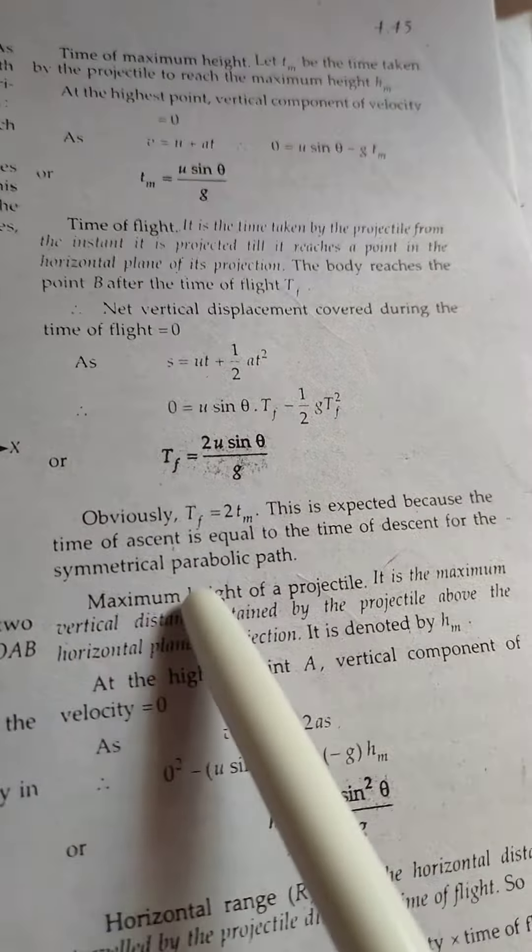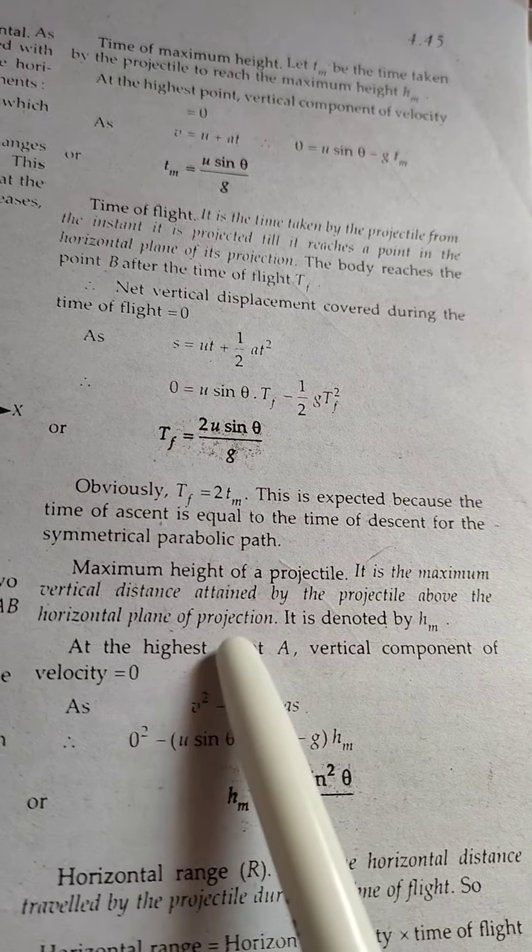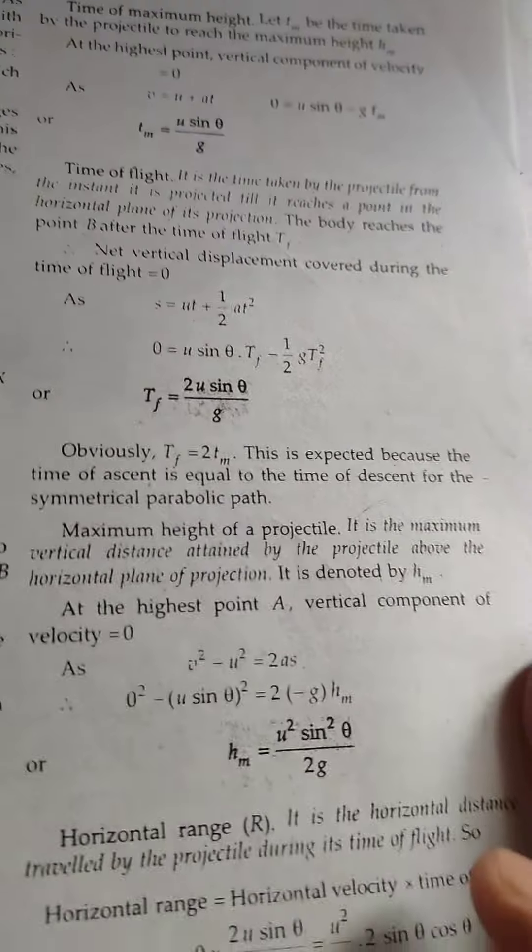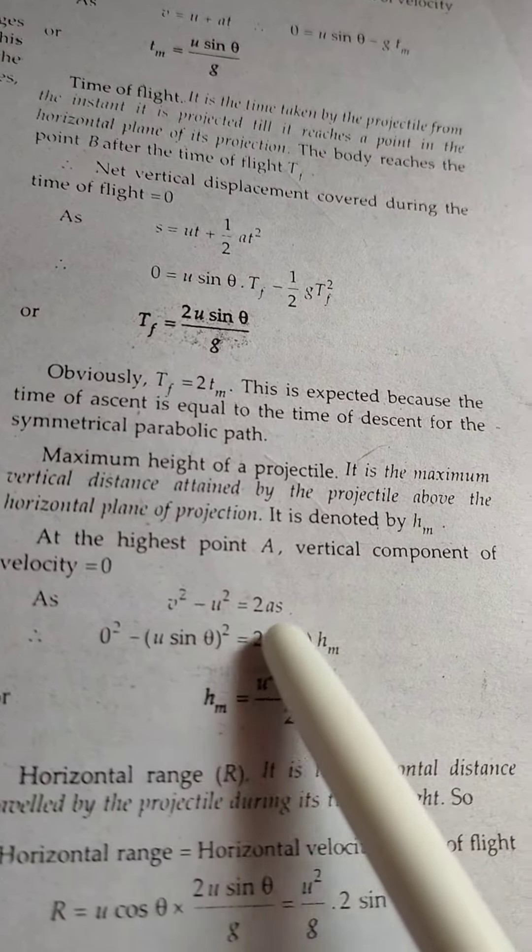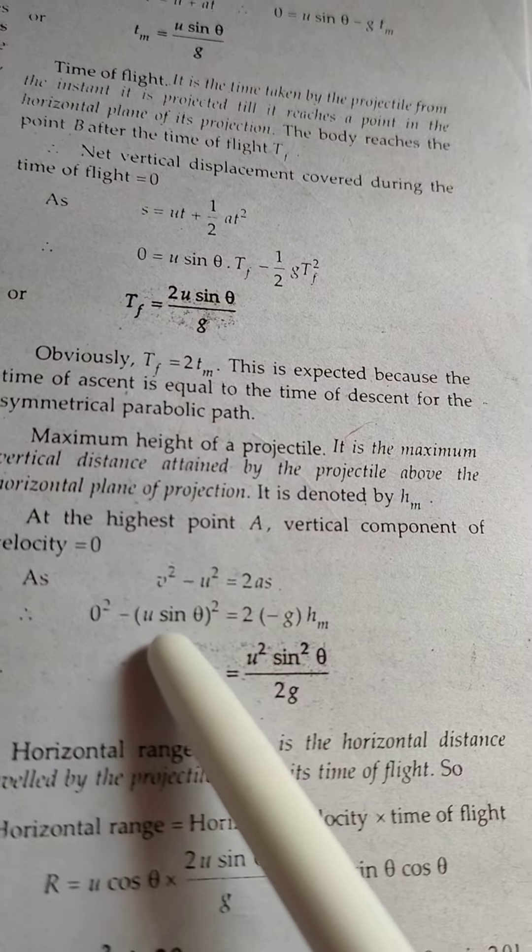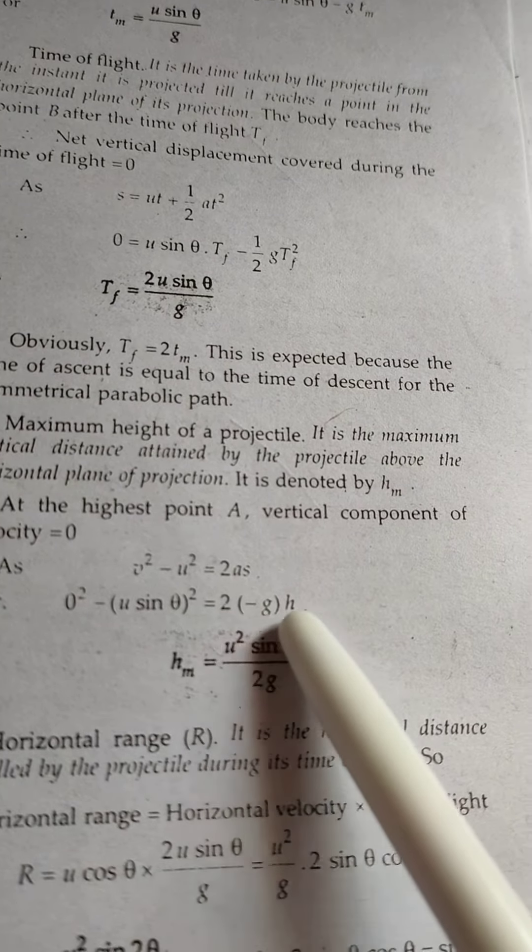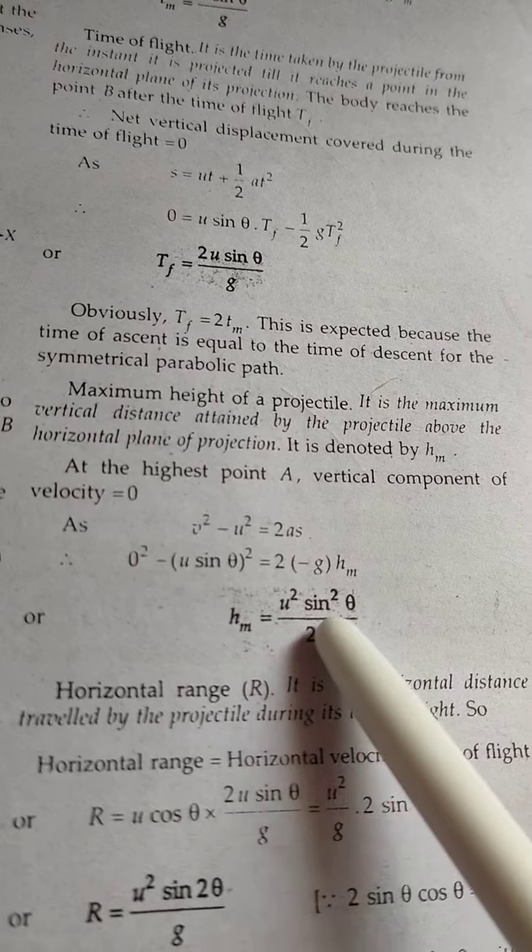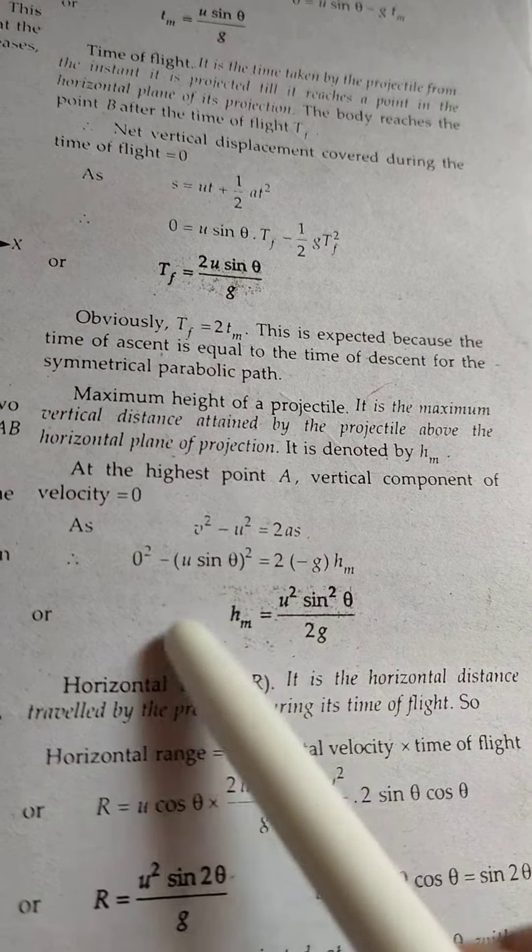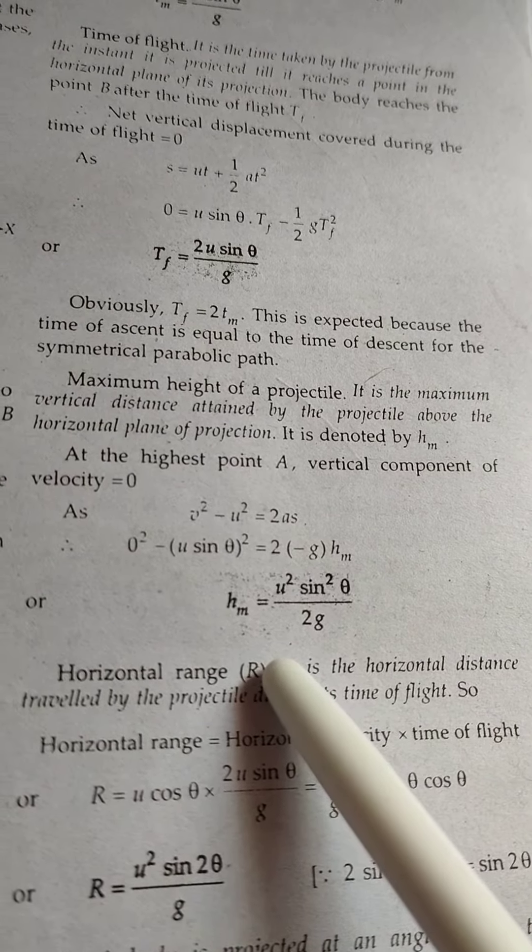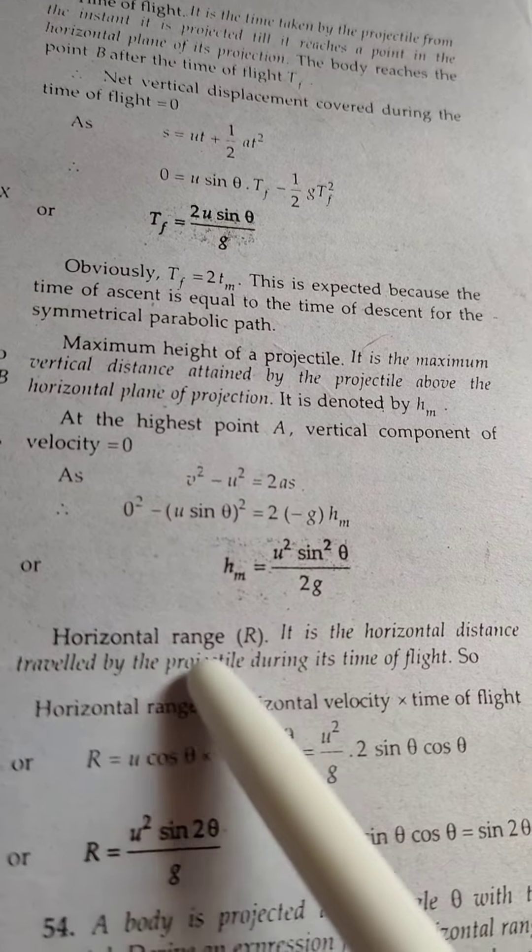It is the maximum vertical distance attained by the projectile above the horizontal plane of projection. It is denoted by h_m. So from the equation v² - u² = 2as, 0 - (u sin θ)² = 2(-g)h_m, so h_m will be equal to u² sin² θ / 2g. This is the maximum height of the flight.